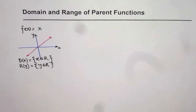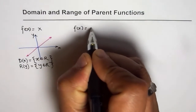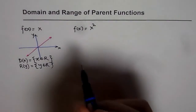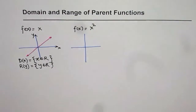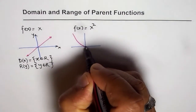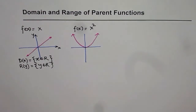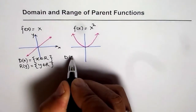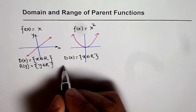Now let us consider another parent function, which is f of x equals to x square. It is represented by a parabola. On the coordinate axis we can draw this function as a parabola with even symmetry going through the origin. Here also we find that the domain is the set of all real numbers, so we can write domain for this function also as x belongs to real numbers.